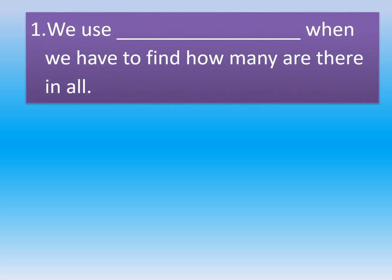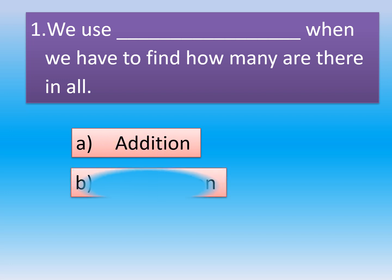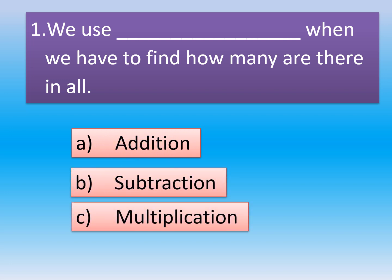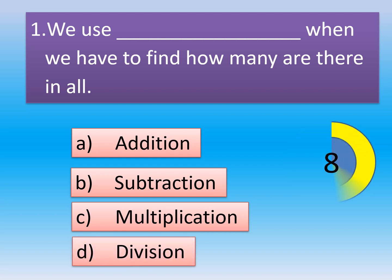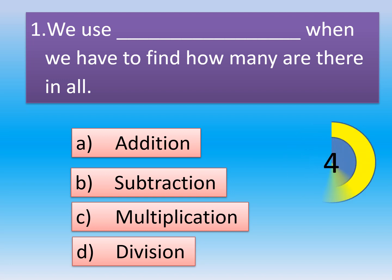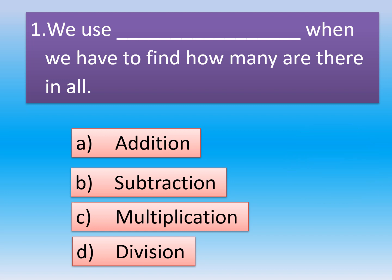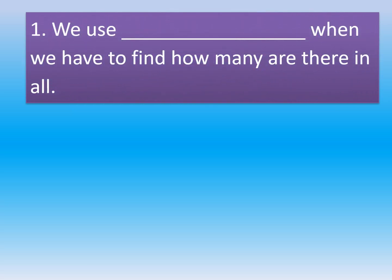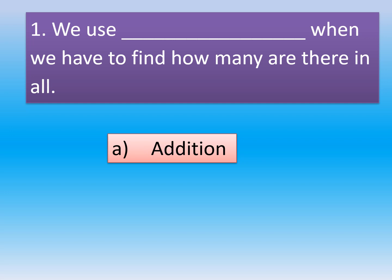Question 1: We use dash when we have to find how many are there in all. Option A: Addition. Option B: Subtraction. Option C: Multiplication. Option D: Division. The correct answer is Option A, Addition. We use addition when we have to find how many are there in all.